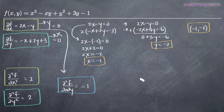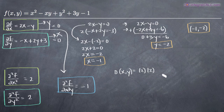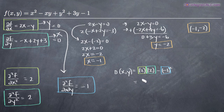To evaluate at the point (-1, -2), I'll use the formula D(x,y) = fxx · fyy - (fxy)². This is the formula you always follow: second order partial with respect to x times second order partial with respect to y, minus the mixed second order partial squared. So I evaluate 2 × 2 = 4, minus (-1)² = 1, which gives me D = 3.